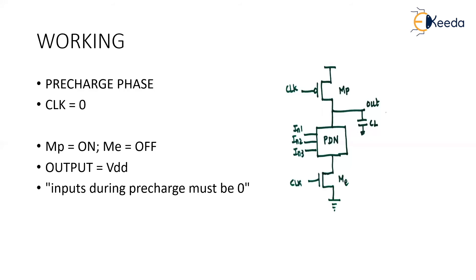When clock equals zero, MP (PMOS) is ON and ME (NMOS) is OFF. Since MP is on, the path from VDD to the output is closed, and the output is charged to VDD. During the pre-charge phase, all inputs to the pull-down network must be zero. So, the output is pre-charged to VDD during the pre-charge phase.